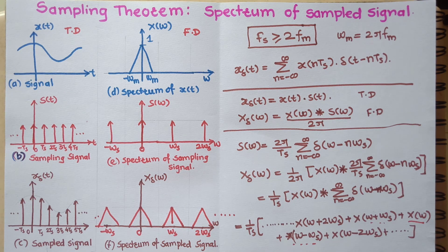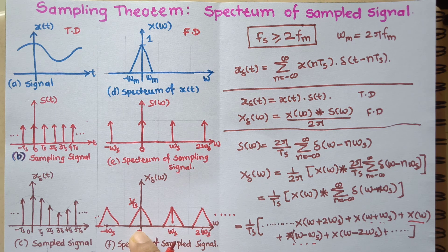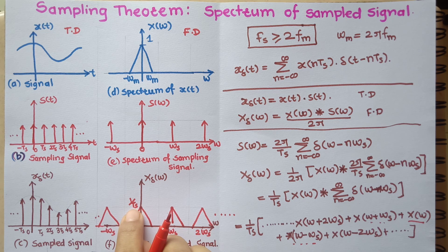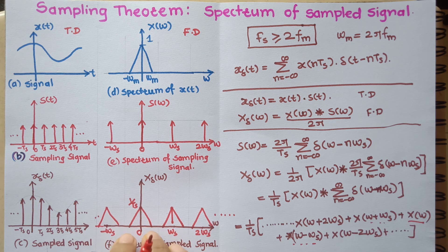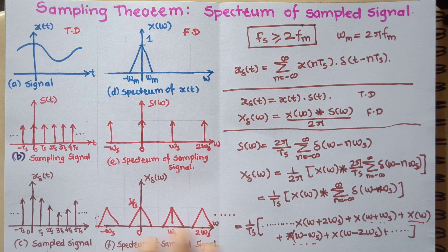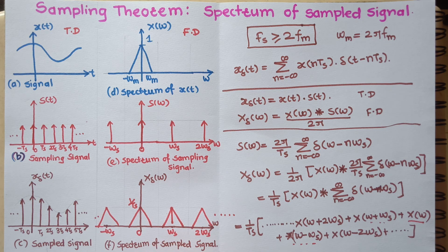We can observe that after sampling x(t), the resulting spectrum X_δ(ω) is an infinite sum of shifted versions of the original spectrum X(ω), all scaled by a factor of 1/Ts. The value of ωs is very crucial here — how this value affects the reconstruction process will be seen in the next lecture. Thank you.